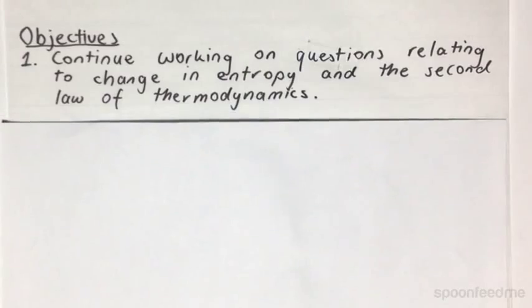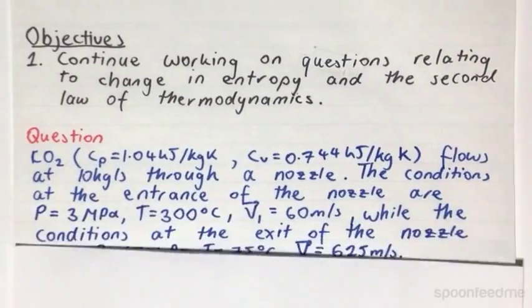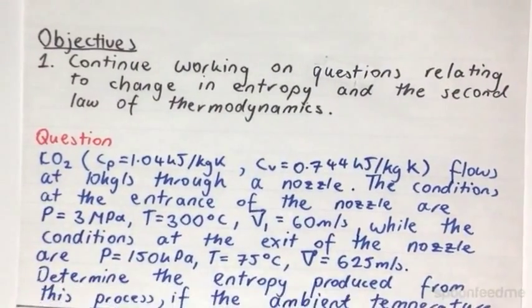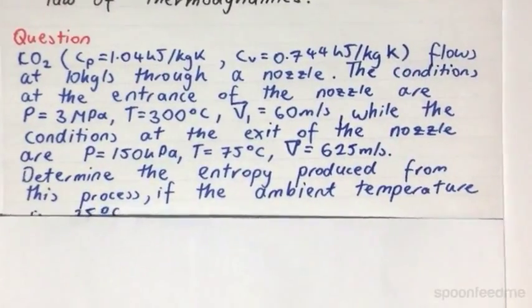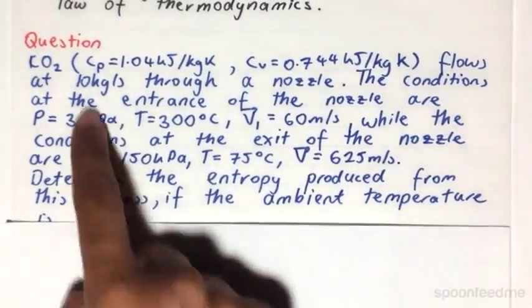So here we have our question. CO2, with these specific values of CP and CV, flows at 10 kilograms per second through a nozzle.